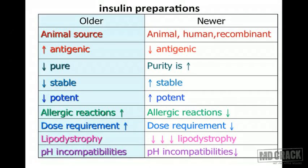Now we move to insulin preparations. A comparison table shows older versus newer insulins. Older insulins were mostly derived from animal sources, whereas newer insulins come from human sources — produced by recombinant DNA technology through genetic engineering. Older insulins were more antigenic due to their animal origin; newer human insulins are significantly less antigenic.